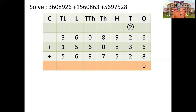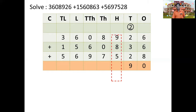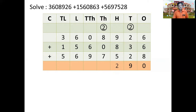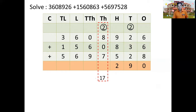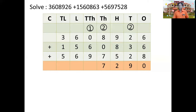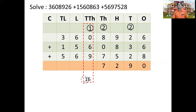In the tens place we have digits 2, 2, 3, and the carried 2; adding these gives 9. Next, in the hundreds place we have 9, 8, and 5, adding them gives 22. We carry 2 to the next place and keep 2 in the hundreds place. In the thousands place we have 2, 8, 0, 7, and the carried 2, giving 17. We carry 1 to the next place and write 7 in the thousands place. Then adding 1, 6, and 9 in the ten-thousands place gives 16, so we carry 1 and put 6 in the ten-thousands place.